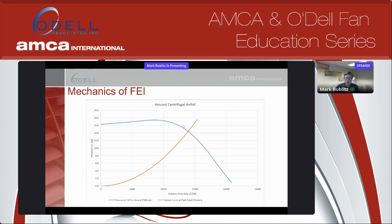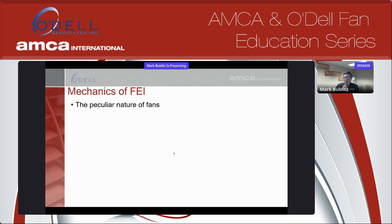Once we have those data points, we draw smooth curves through them — that is the fan curve we tend to portray. I've also drawn a system curve. If you attach this fan to a system that requires a particular flow and pressure, that intersection of the orange line and the blue line is where the fan can be expected to perform. That data comes from ideal conditions, so there might be reasons you won't be exactly there, but for the most part that's our best guess. If you slow the fan down, the whole curve collapses toward the origin along the system curve.